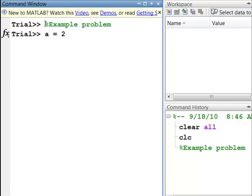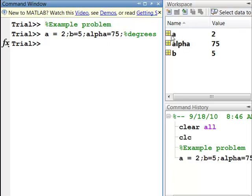First thing we're going to do is define the variables we were given in the problem. So, we know A equals 2, and B equals 5. We're just using those. And then alpha equals 75. And I'm going to put a note here that that's in degrees so that we remember that. And we'll hit enter. And you'll see over here in the workspace, those three variables are now created in the workspace, and as we've been working, the command history is recording what we're doing.